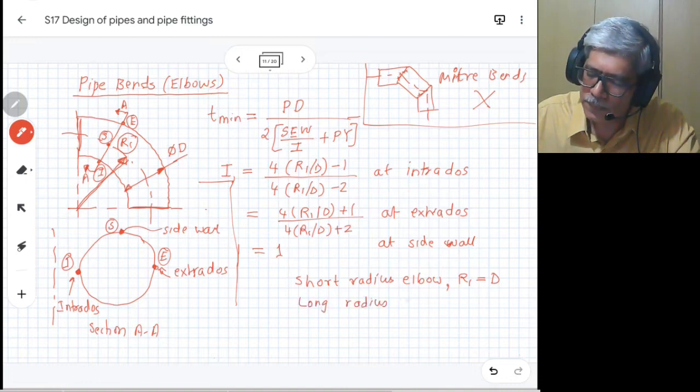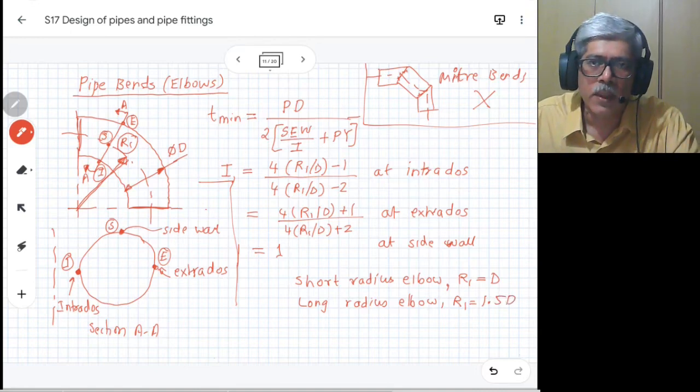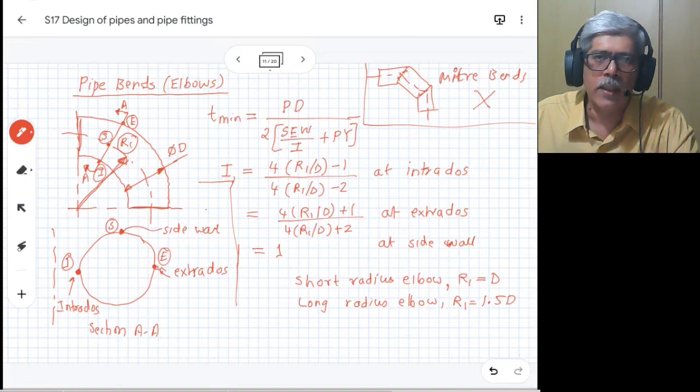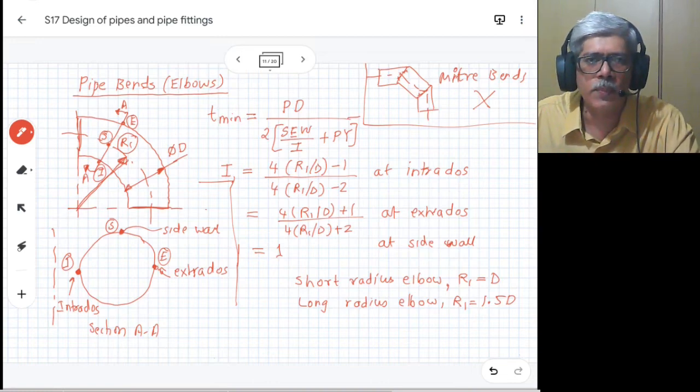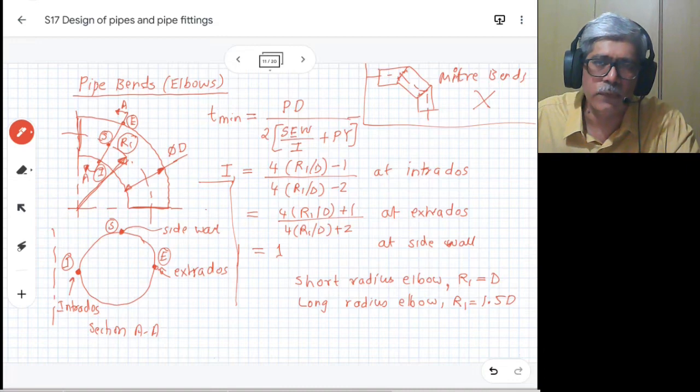In general, the long radius elbow is preferred because it requires lesser thickness, but on the compensating side, you require more space to accommodate that. So if you have space constraint, then only you will go for short radius elbow.